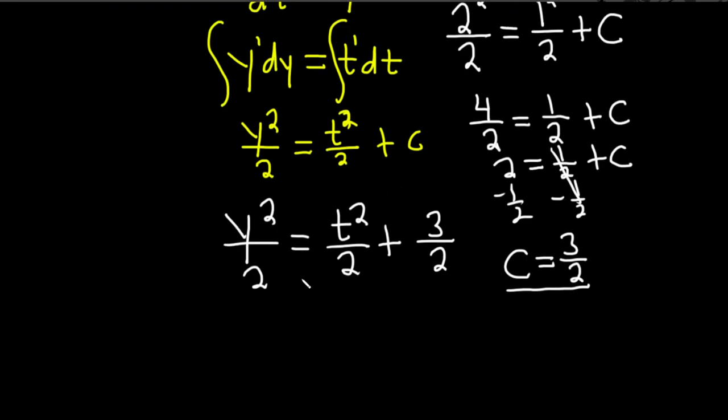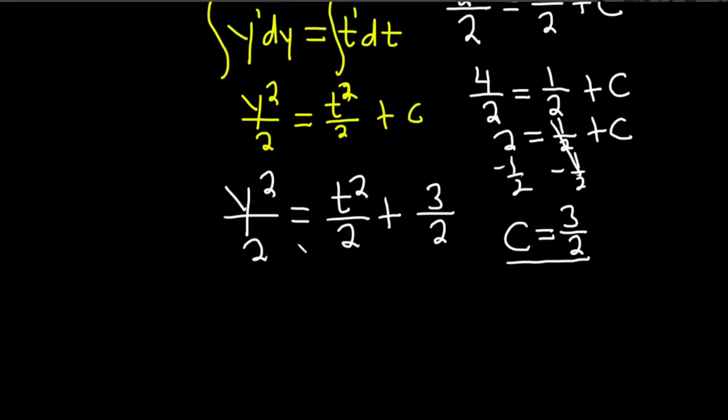You're probably thinking, what's with all the 2's? Just multiply both sides by 2 and we can get rid of all of these 2's. So we get y squared equals t squared plus 3.